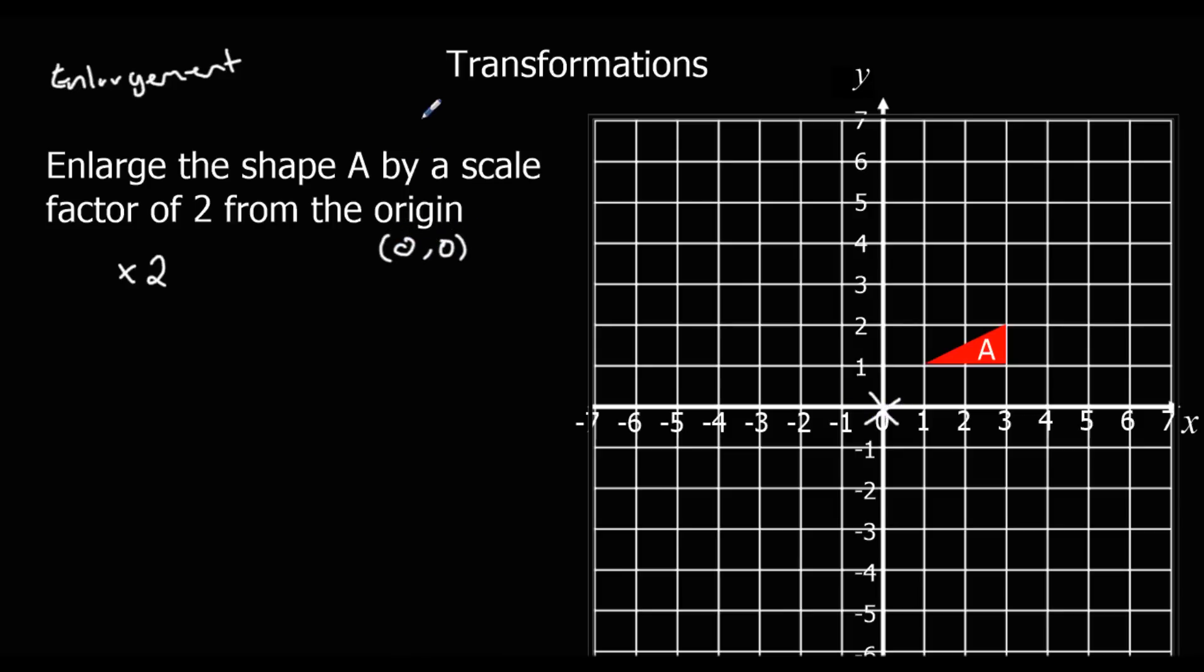So what we've got to do is we've got to draw a shape twice as big, and we've also got to draw it in the right place. So to get to this bottom corner, this one here, we went 1 across, 1 up.